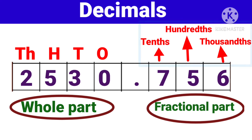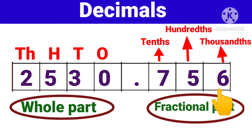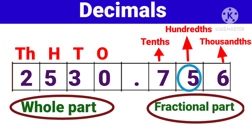Yahaan par 10th, 100th, and 1000th. Yahaan dekhiye — whole part ke numbers ko hum right side se count karenge. Aur jo fractional part ke numbers hain, unko hum left side se count karenge. Yani, dot ke baad first jo hai, woh place hoga 10th place. Uske baad wala place hoga 100th place. Aur uske baad wala place hoga 1000th place. So here, 7 is at 10th, 5 at 100th, and 6 at 1000th.